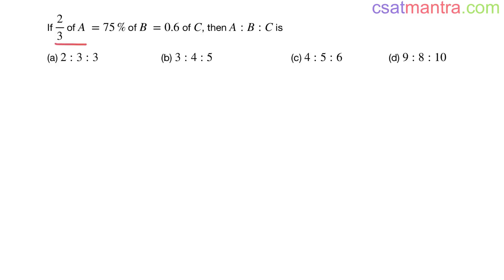If 2/3 of A is equal to 75% of B is equal to 0.6 of C, then A:B:C is... 2/3 of means multiplication into A is equal to 75%. You will replace it with 1 by 100.